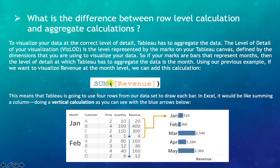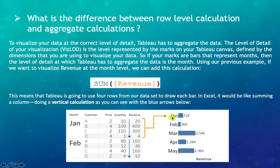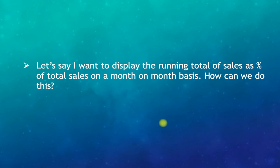When you apply sum of revenue, it is calculated at the visualization level of detail. For example, if months are displayed, Tableau will sum the revenue field for each month — summing all rows belonging to January to produce the January total, and similarly for February. That is how aggregate calculations are performed.